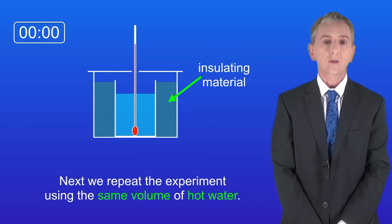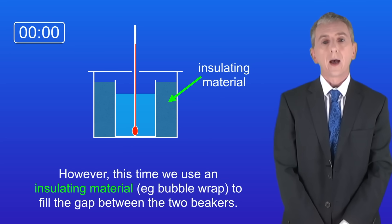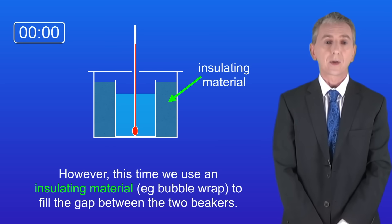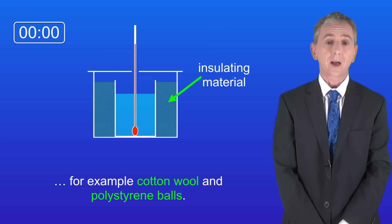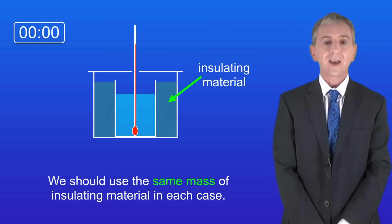Next we repeat the experiment using the same volume of hot water however this time we use an insulating material, for example bubble wrap, to fill the gap between the two beakers. We should test a range of different insulating materials, for example cotton wool and polystyrene balls. We should use the same mass of insulating material in each case.